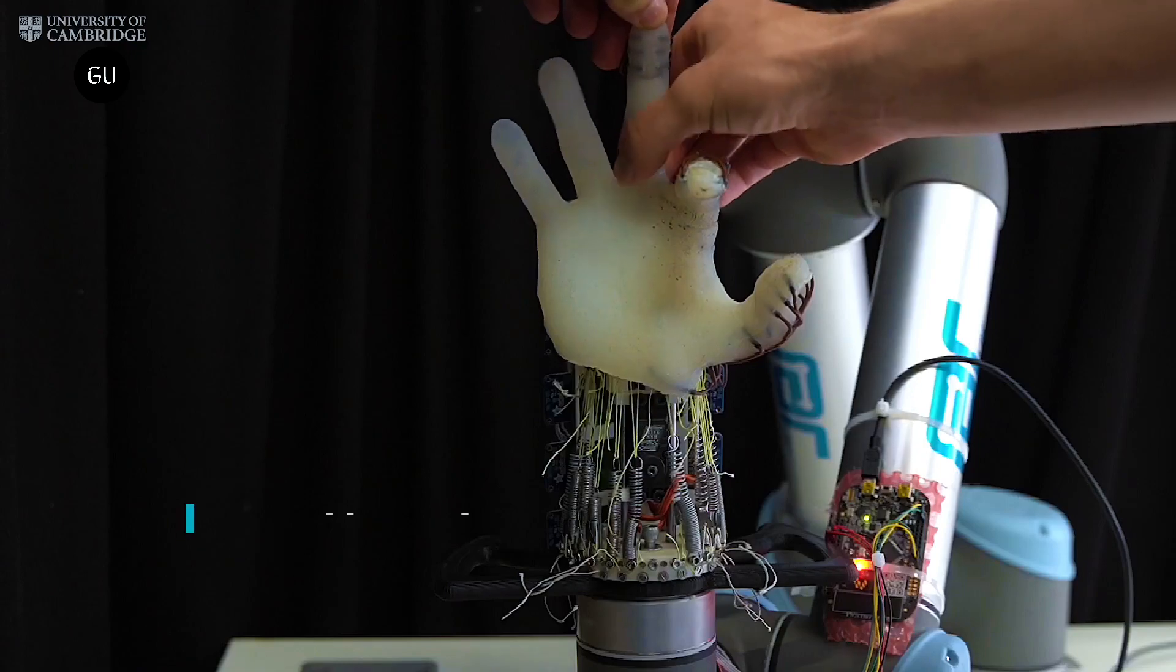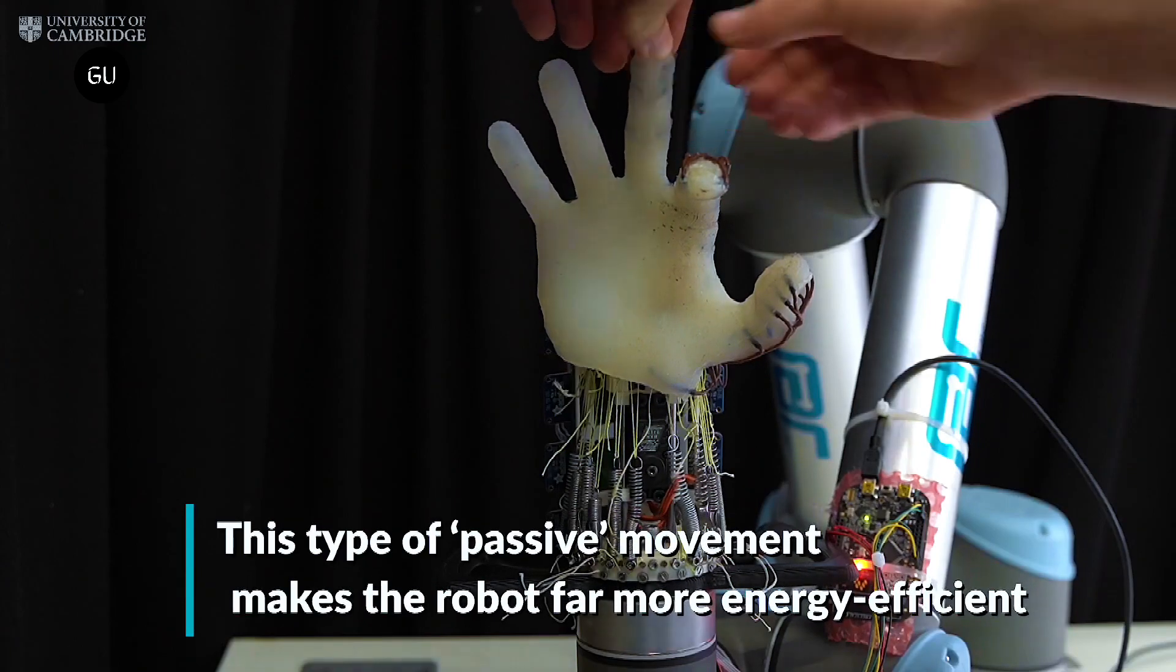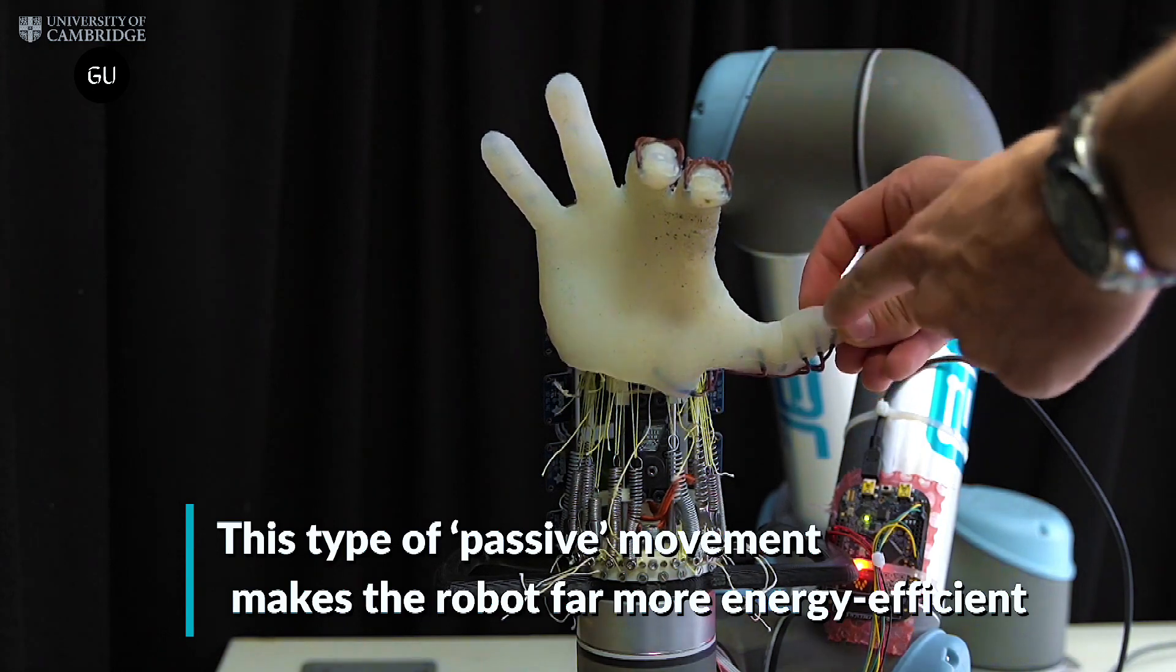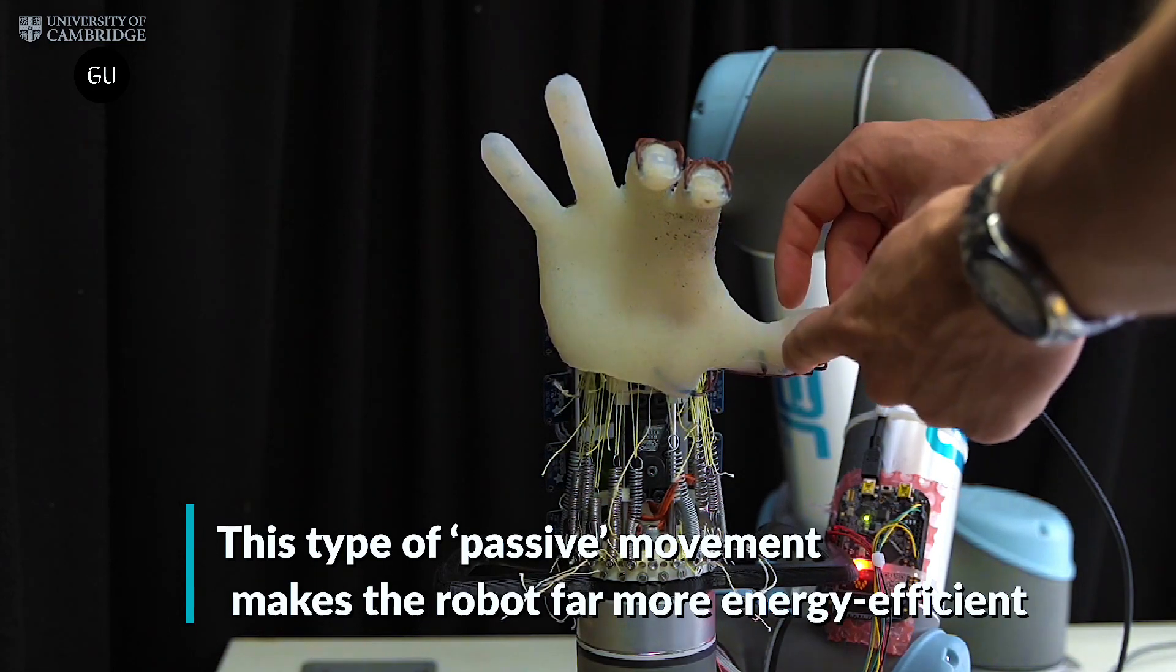The passive design of the Cambridge-developed robotic hand, combined with a small number of sensors, streamlines control, provides a wide range of motion, and simplifies the learning process.